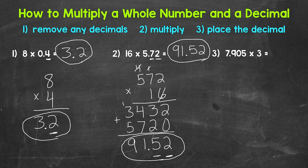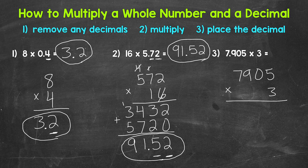Now let's move on to number three. We have seven and nine hundred five thousandths times three. Let's remove any decimals — so we have seven thousand nine hundred five times three. We multiply: three times five is fifteen, three times zero is zero plus one is one, three times nine is twenty-seven, and three times seven is twenty-one plus two is twenty-three. So we end up with twenty-three thousand seven hundred fifteen.